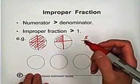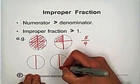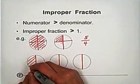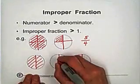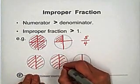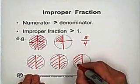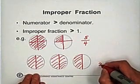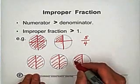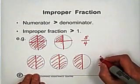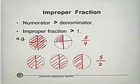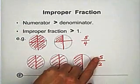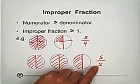Also, if you cut into two parts — cut two parts, cut two parts — and first you choose all parts from the first two pies, and from the third pie you choose one. You cut two parts total. Five parts, and you choose one, two, three, four, five — five parts: five over two. So numerator is greater than denominator. The improper fraction is greater than one.